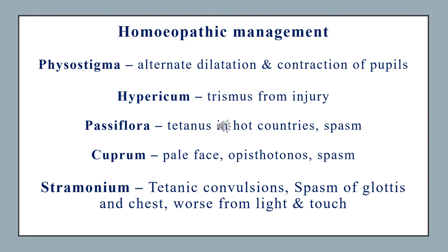Homeopathic management for neonatal tetanus: Physostigma — when there is alternate dilatation and contraction of pupils. Hypericum — prescribed when there is trismus due to any injury. Passiflora — given if tetanus develops in a hot country or hot climate and spasms are present. Cuprum metallicum — prescribed when the neonate has a pale face, opisthotonos, and spasms. Passiflora — when there are tetanus convulsions and spasms of the glottis and chest, worse from light and touch.